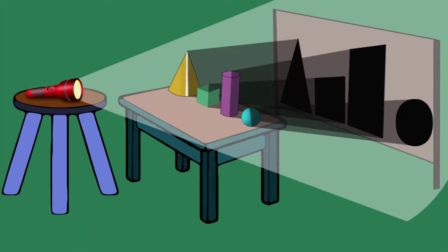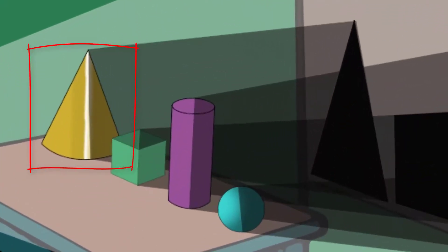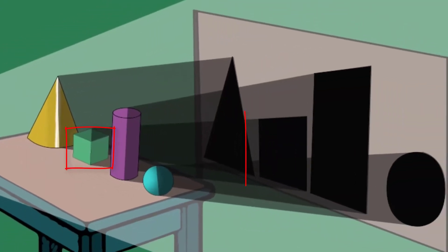The shadow of the three dimension shape of cone is looking like a two dimension shape of a triangle. The shadow of the three dimension shape of cube is looking like a two dimension shape of a square. The shadow of the three dimension shape of a cylinder is looking like a two dimension shape of a rectangle.